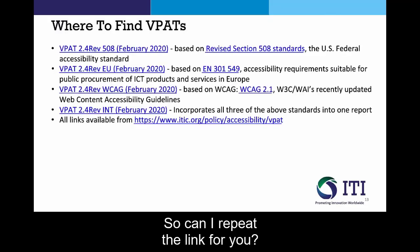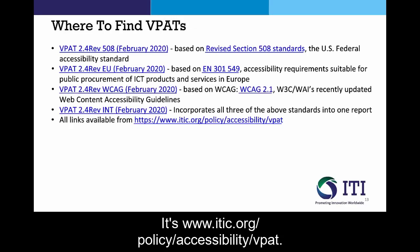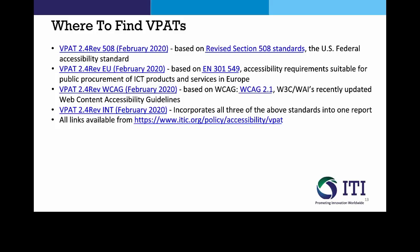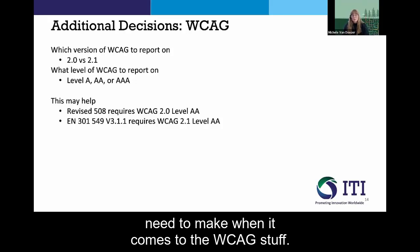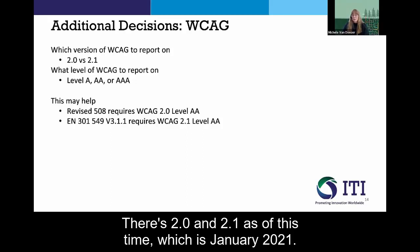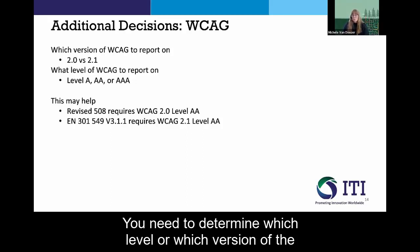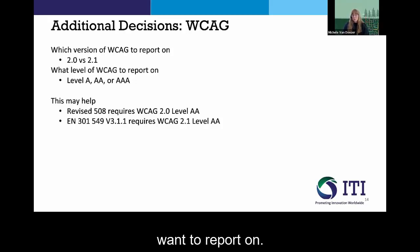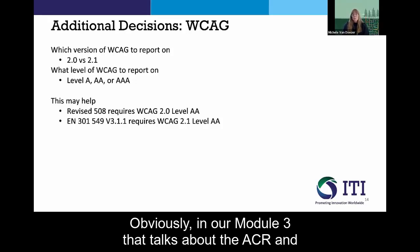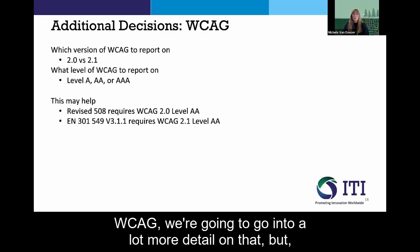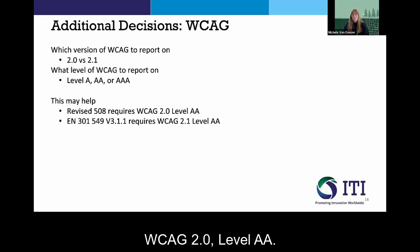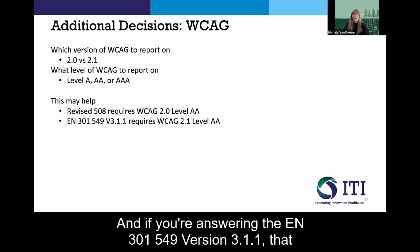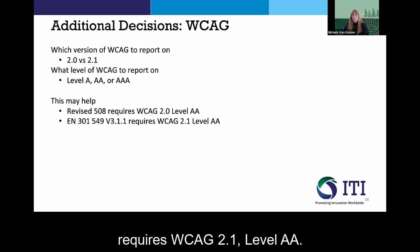Some additional decisions you need to make relate to the WCAG criteria. As of January 2021 there are two versions — WCAG 2.0 and 2.1 — and you need to determine which version and which level you want to report on: Level A, AA, or AAA. Module 3 will go into much more detail on that. To note: if you're answering with regards to Revised Section 508, that requires WCAG 2.0 level AA. If you're answering the EN 301 549 version 3.1.1, that requires WCAG 2.1 level AA.